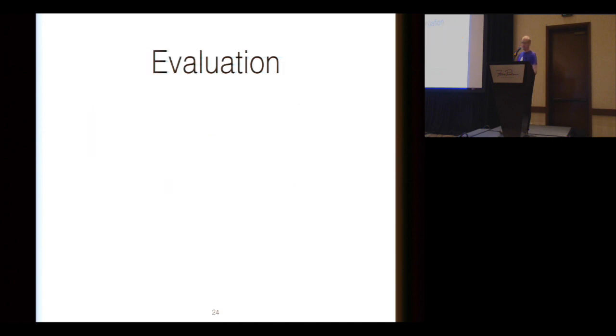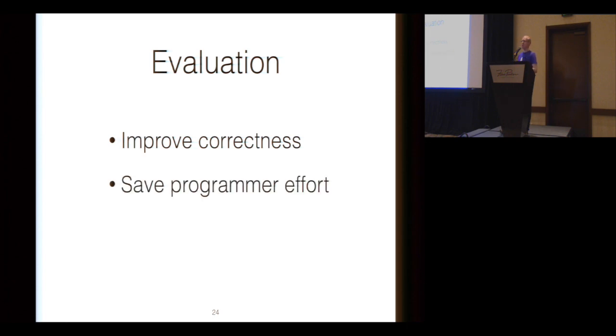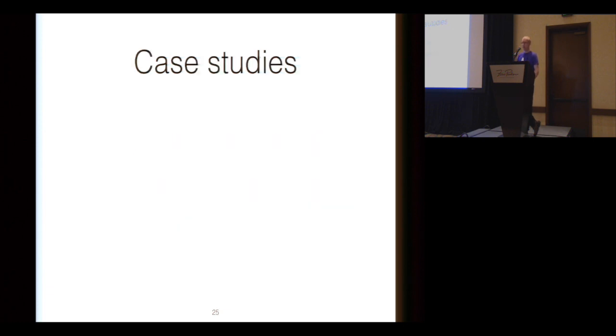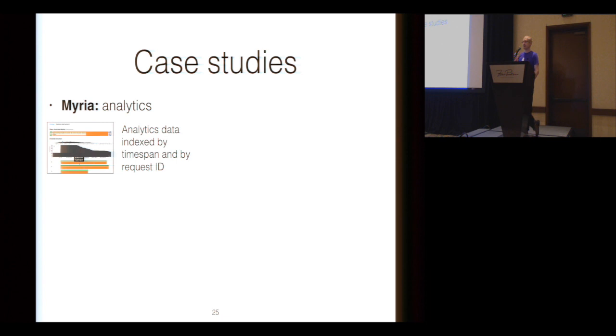In our evaluation, we wanted to test if the data structures we synthesize could improve the performance of real applications. We wanted to somehow save programmer effort and to be easier than writing implementations manually. We aimed to do both of these things while matching the performance that human programmers would have written. We evaluated four different case studies. The first was Myria, the database system I mentioned. The second was ZTopo, which is a graphical topological mapping tool for interacting with and panning around maps. It has to download tiles and cache them, and there are a lot of very tricky invariants while it's tracking the states of tiles.